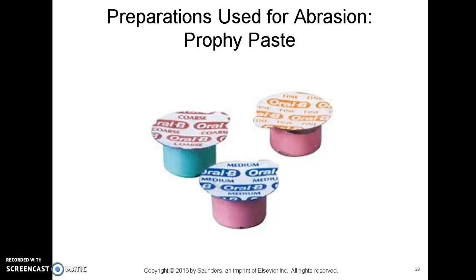Here is a look at some prophy cups. The coarseness is indicated on the top of the container. The colors sometimes correlate to the coarseness of the grit — in the Nupro brand specifically, green is medium, red is coarse, and orange is fine.